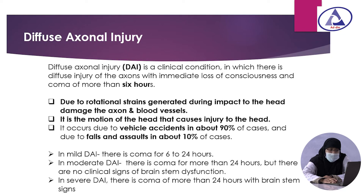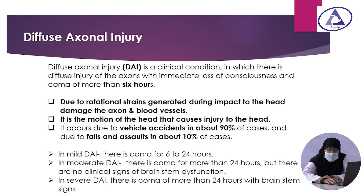In mild diffuse axonal injury, coma persists for 6 to 24 hours. In moderate diffuse axonal injury, coma is more than 24 hours but there are no clinical signs of brain stem dysfunction. In severe diffuse axonal injury, coma is more than 24 hours with brain stem signs.